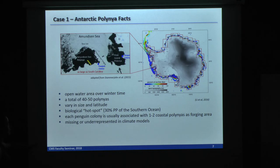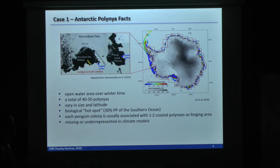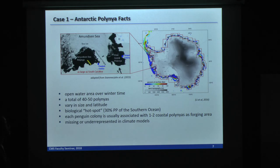Despite this importance, unfortunately, so far those polynyas are largely missing or underrepresented in all climate models used for IPCC. The reason is first because their resolution is too coarse to resolve polynya. And also the dynamics within polynya are quite different from the open ocean. That's why it requires separate study to understand what's really controlling the primary production here.